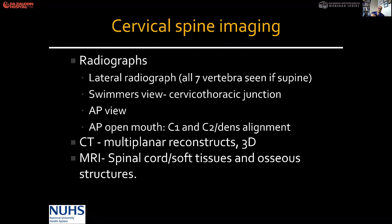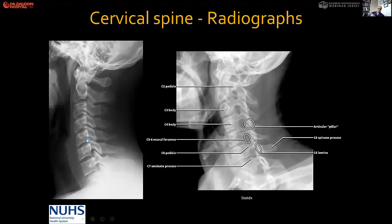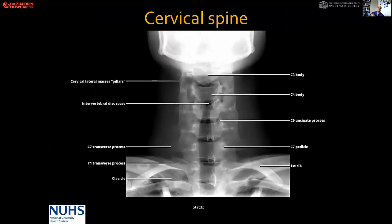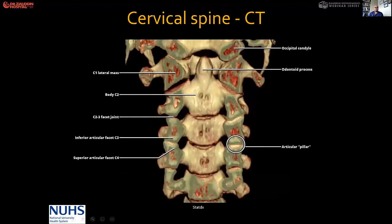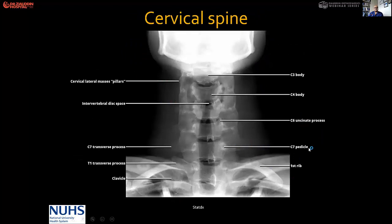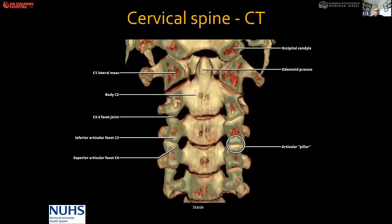MRI definitely has its own place. A well-taken lateral radiograph can show the C7-T1 junction, and an oblique radiograph shows you the neural foramen. On the AP radiograph you can see the C2 vertebral body, C4, the uncinate process, and C7. The area between the two lateral masses is called the articular pillar. On CT axial cut you can see the uncovertebral joints, facet joints, foramen, and the vertebral artery.